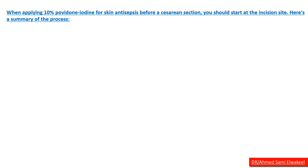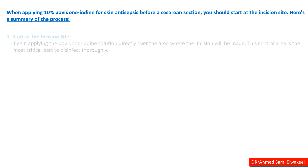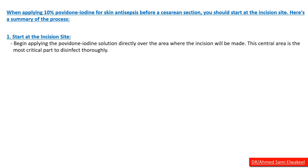When applying 10% povidone iodine for skin antisepsis before caesarean section, you should start at the incision site. Begin applying the povidone iodine solution directly over the area where the incision will be made. This central area is the most critical part to disinfect thoroughly.